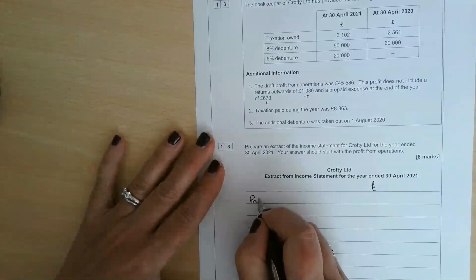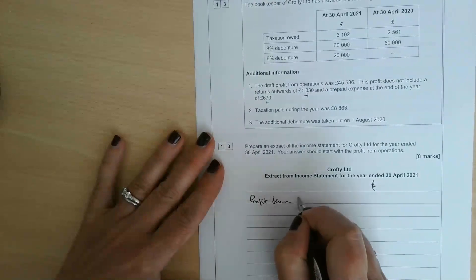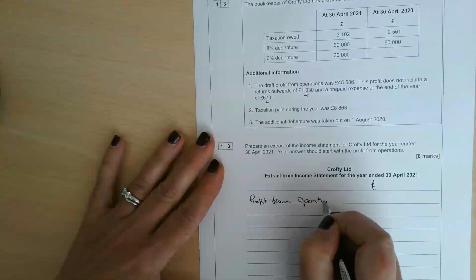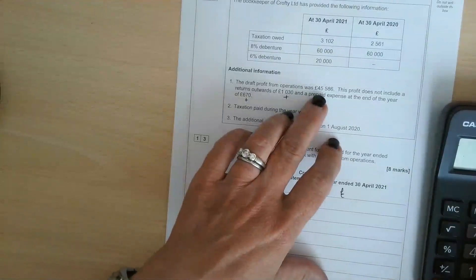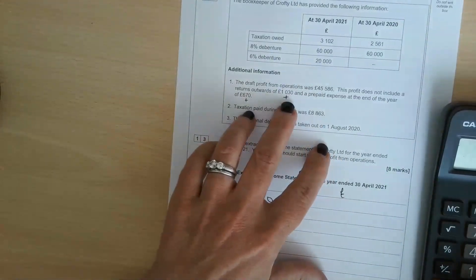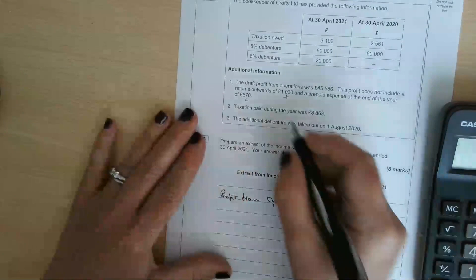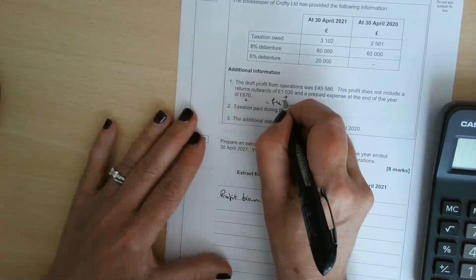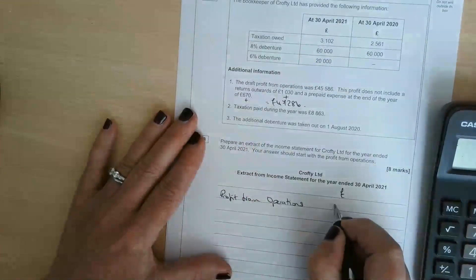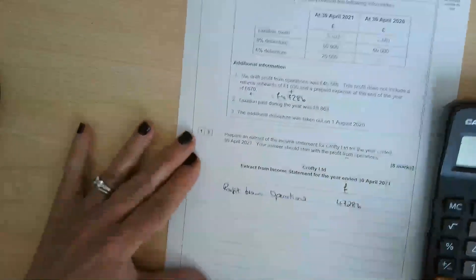Let's make a start. Profit from operations is going to be £45,586 plus £1,030 plus £670, which gives us £47,286.